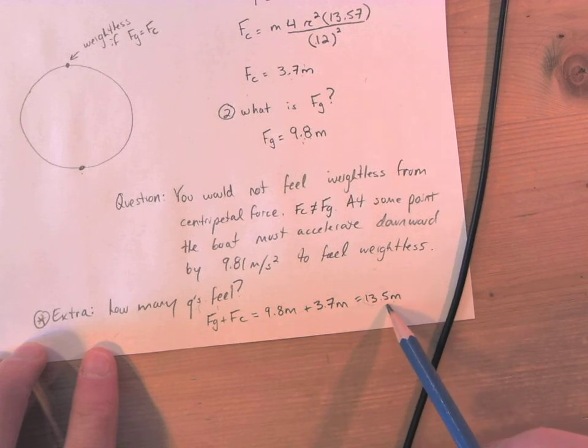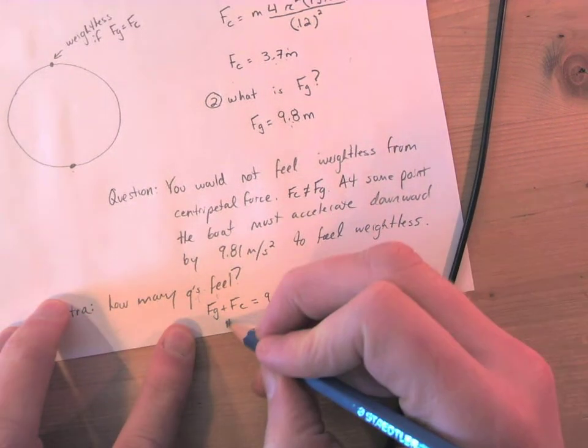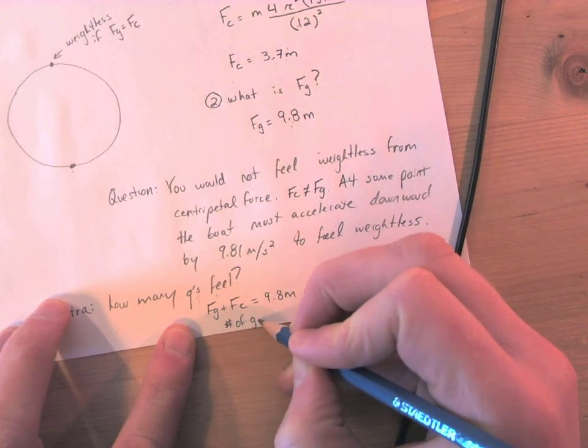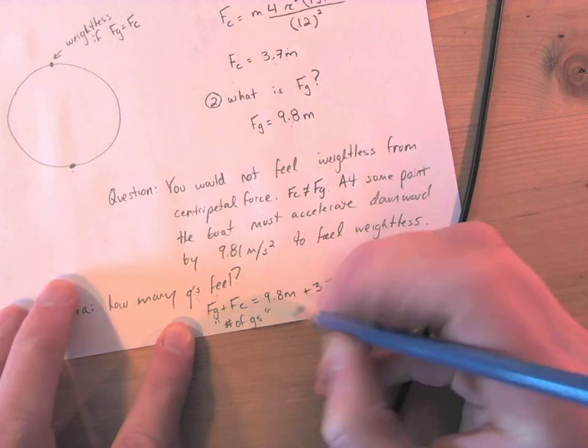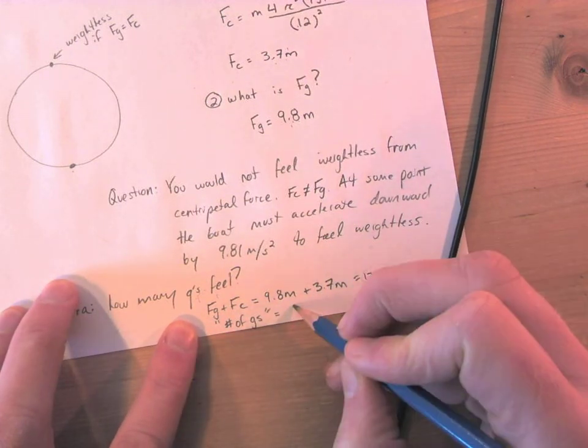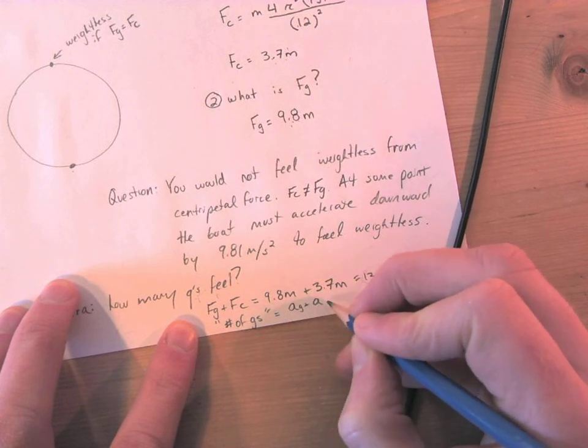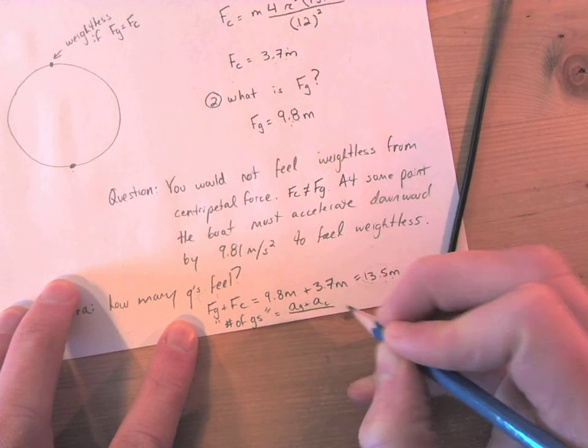So if we want to find out how many g's, number of g's, we just go acceleration of gravity plus acceleration centripetally over 9.81, because we know 9.81 means a g.